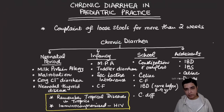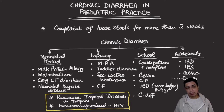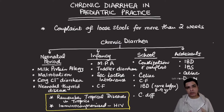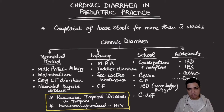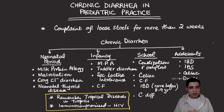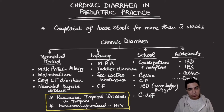Today we will be talking about chronic diarrhea in paediatric practice. Chronic diarrhea by definition is the passage of loose stools for more than two weeks. Loose stools are stools which take the shape of the pan in which they go — not formed, more of a liquid consistency. If a child is passing these loose stools for more than two weeks, we call it chronic diarrhea.